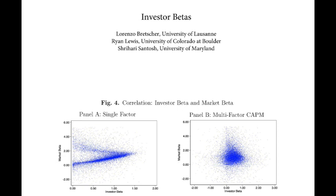This is going to key into a lot of literature. There's also a different segment of the asset pricing literature this relates to: papers that show asset managers are actually not so terrible at stock picking, particularly if you look at their largest allocations. Some of that work is going to be closest in methodology to what we're doing today.